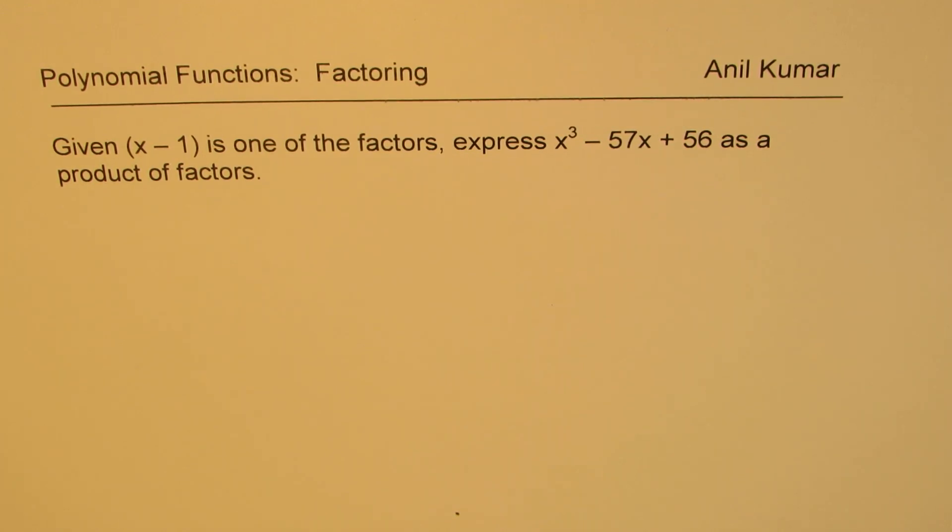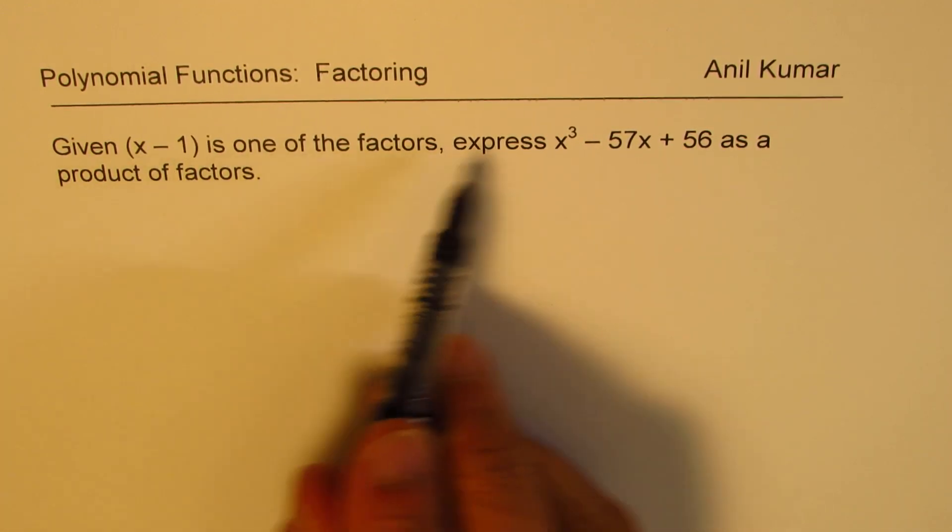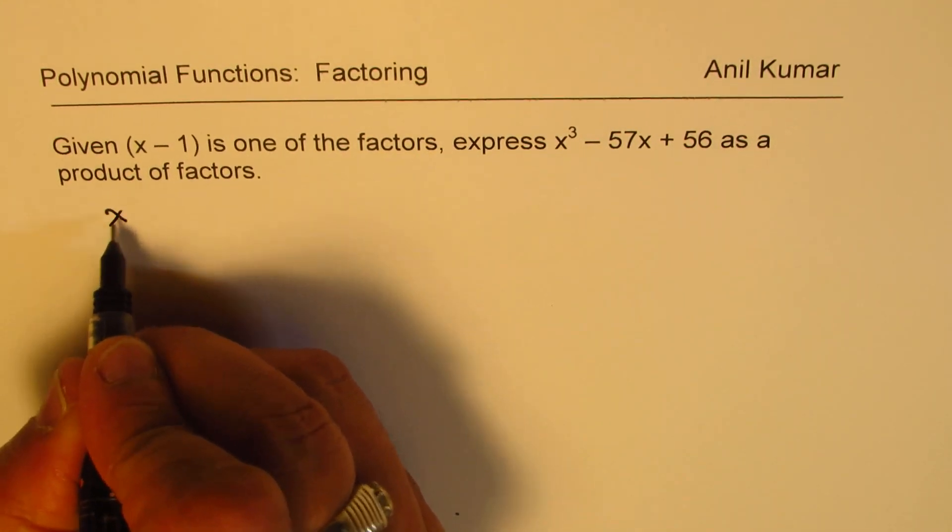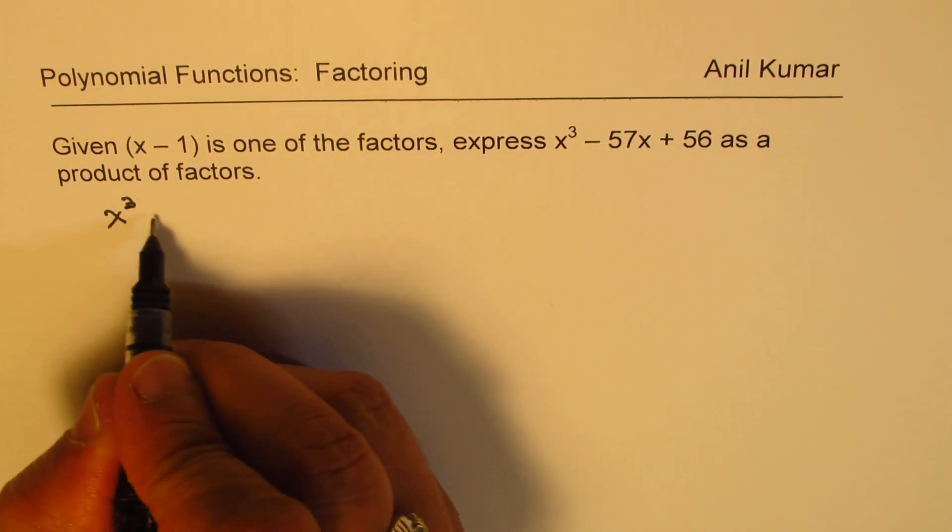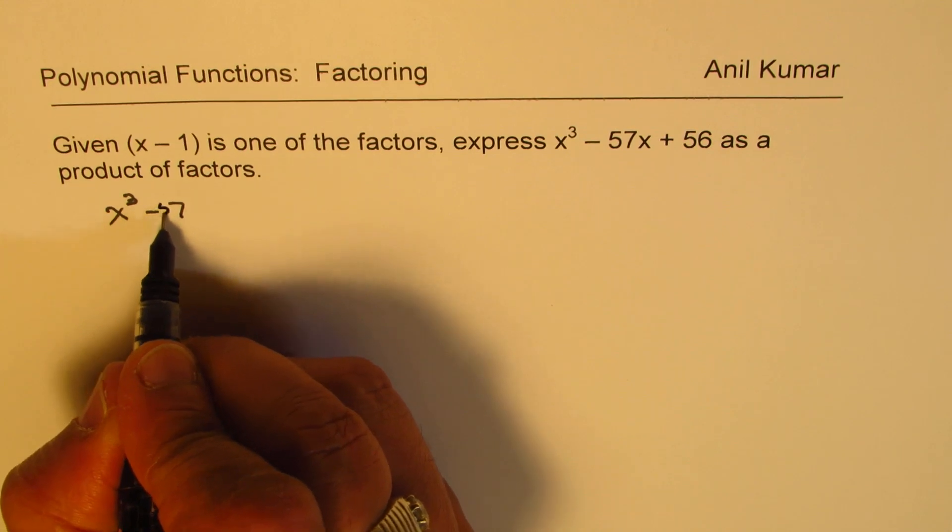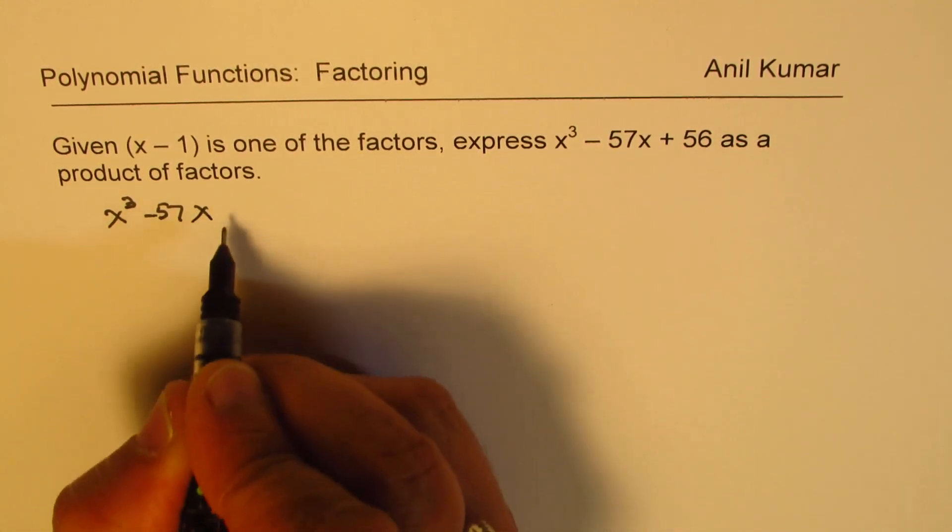So how can we do it? We know x minus 1 is a factor. So we have x cubed minus 7x, 57x I'm sorry, 57x plus 56.